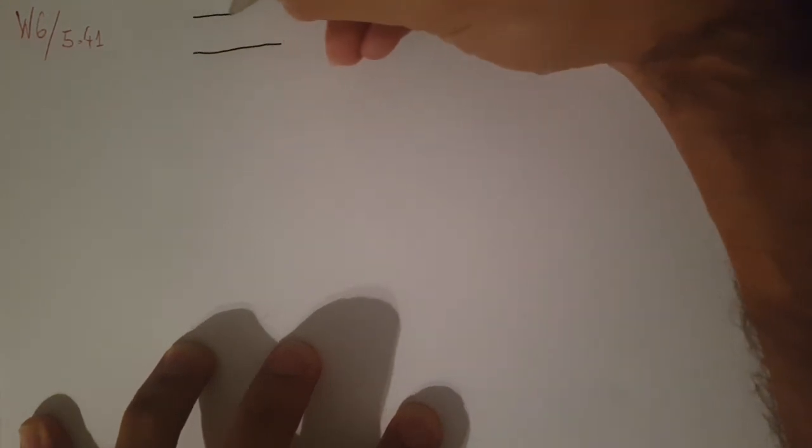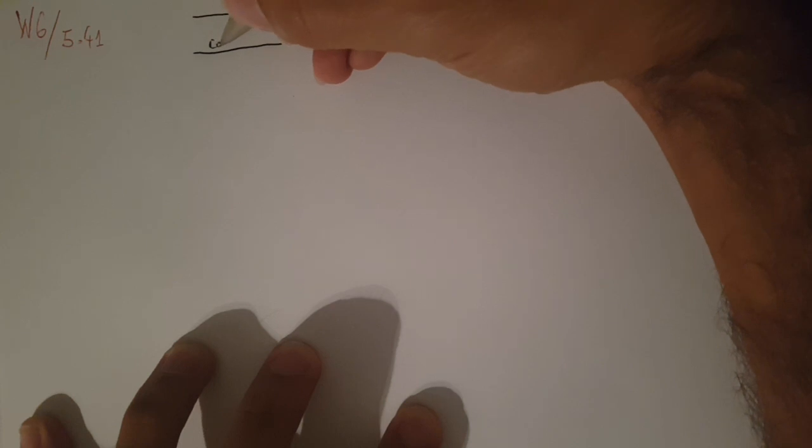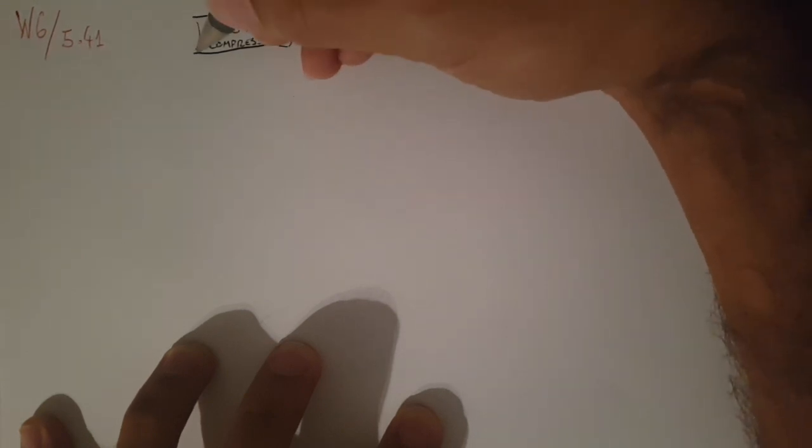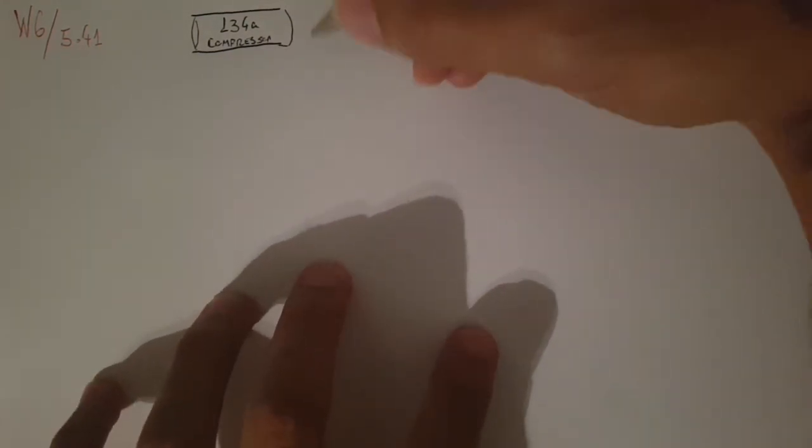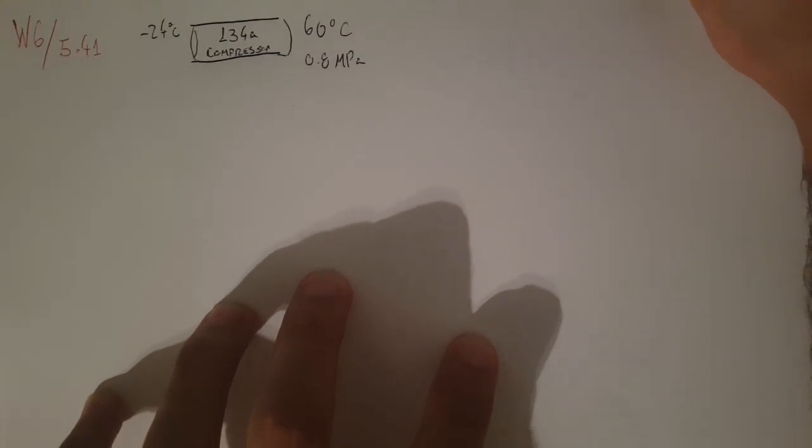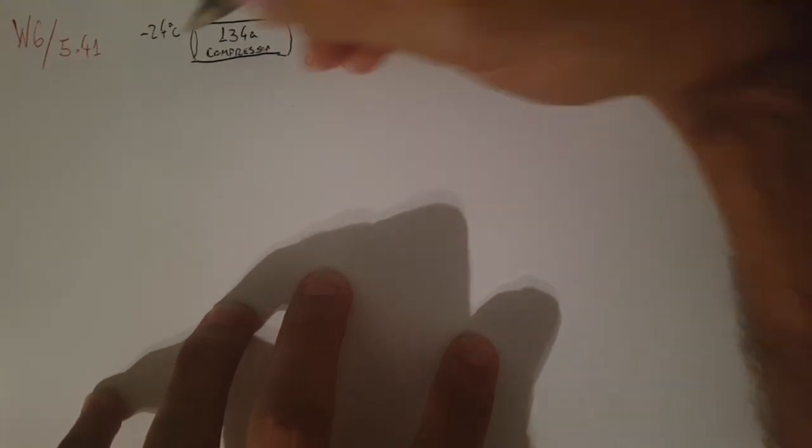Let's draw the compressor with what we have inside so we don't use wrong tables. It's leaving the system at 60 celsius and 0.8 megapascals, and entering at minus 24 celsius as a saturated vapor.